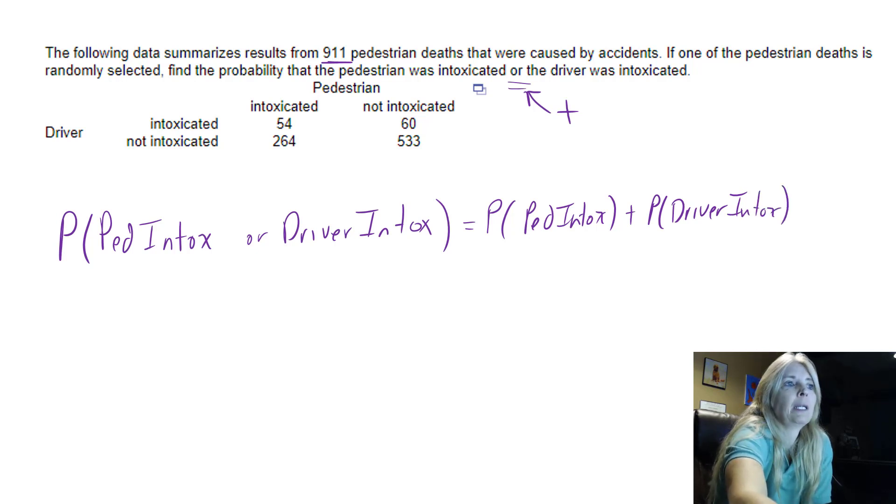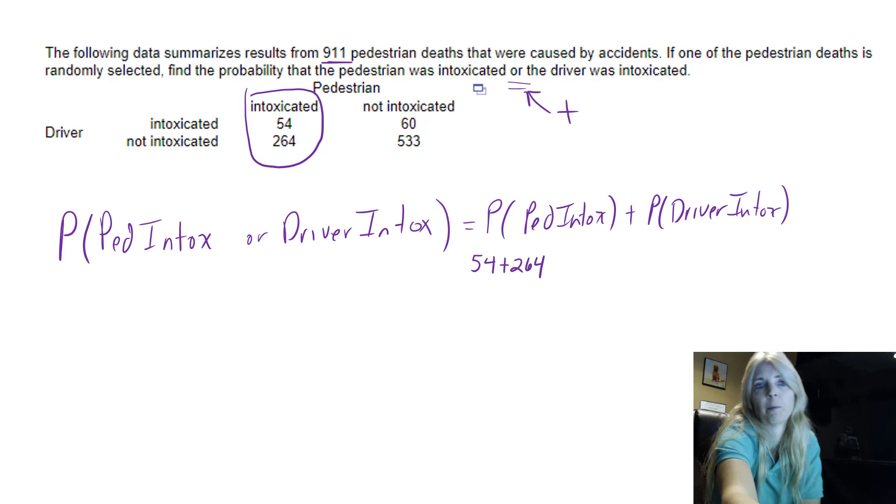So the probability a pedestrian is intoxicated is going to be 54 plus 264, right? Because that column is all the pedestrians that are intoxicated and the probability out of the total.